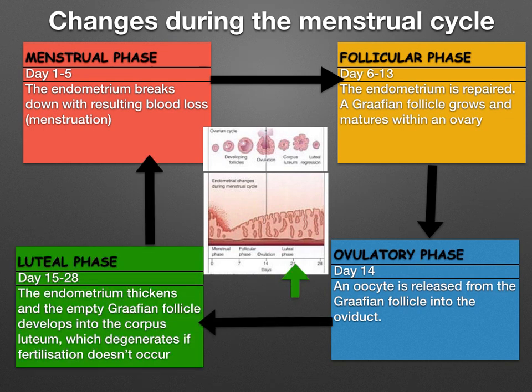The luteal phase is day 15 to day 28. This is when the endometrium thickens and the empty Graafian follicle develops into the corpus luteum. This will degenerate if fertilization doesn't occur.